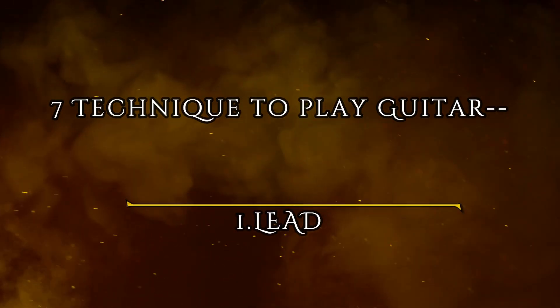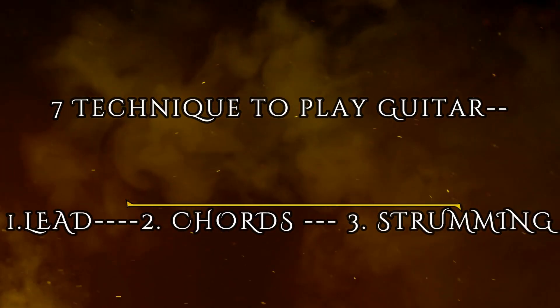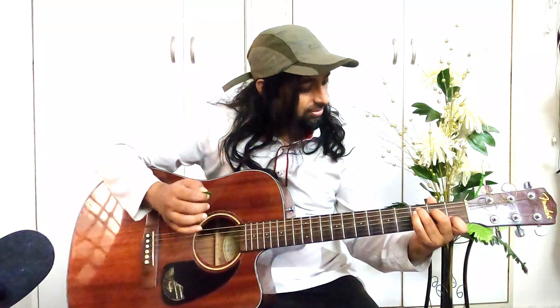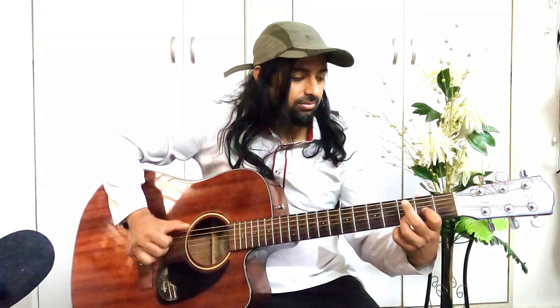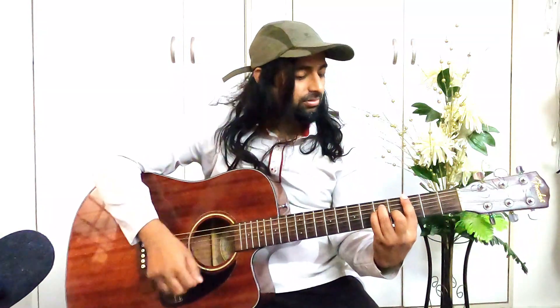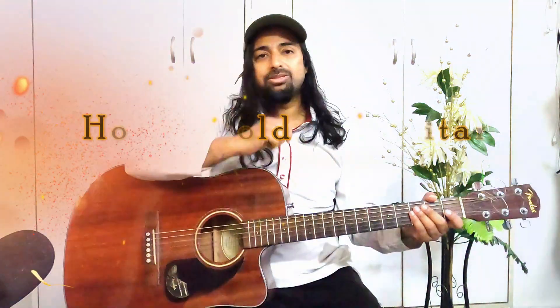The 7 techniques are: Number 1 Lead, Number 2 Chords, Number 3 Strumming or Rhythm, Number 4 Plucking, Number 5 Fingerpicking, Number 6 Palm Muting, and Number 7 Percussive Strumming with Picking.